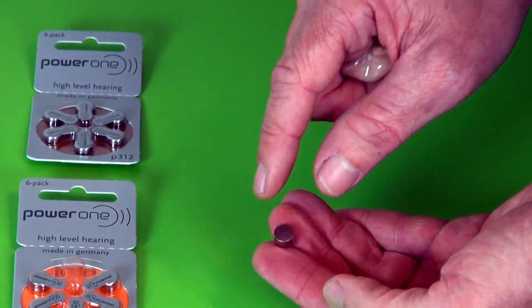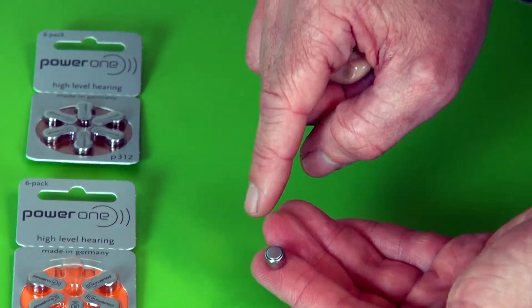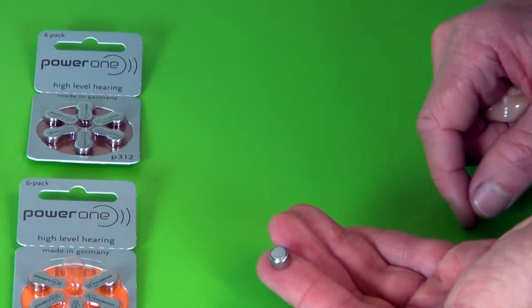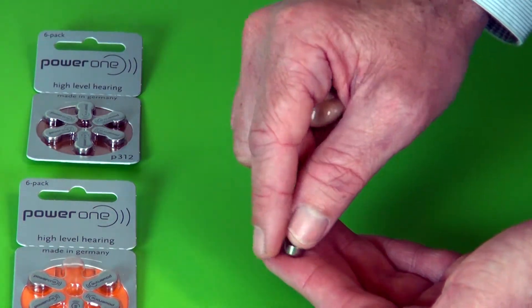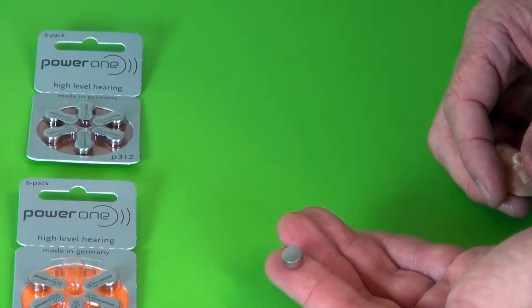There is a flat surface and then a surface with a little ring around it. The surface with the ring around it is the negative side of the battery. The flat surface is the positive side of the battery.